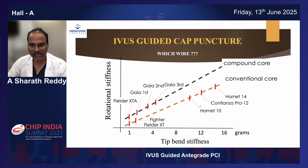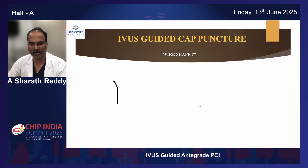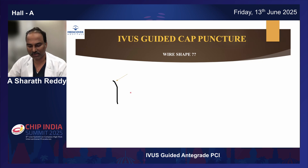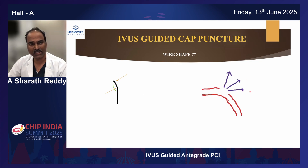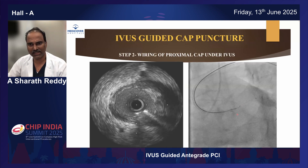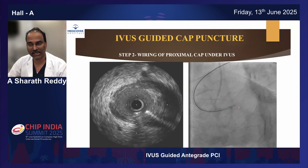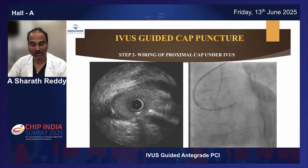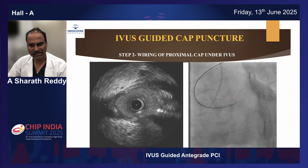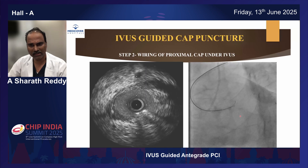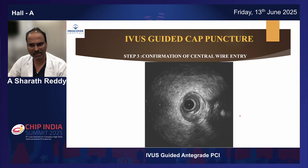These are the three wires - Hornet, Confianza 110, or Confianza 14 - whose tip bend stiffness is quite high. That's the reason they are the right wires for cap puncture. The wire shape has a bend at one millimeter as well as another bend at four to six millimeters. The secondary bend is something you have to adjust to the angle of attack of the cap.